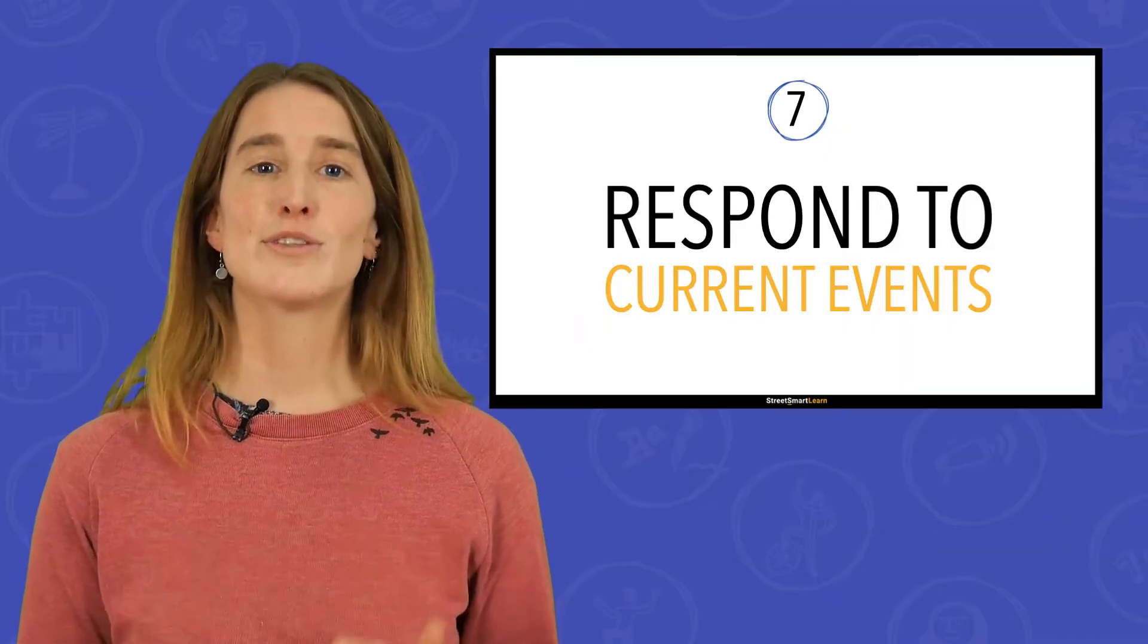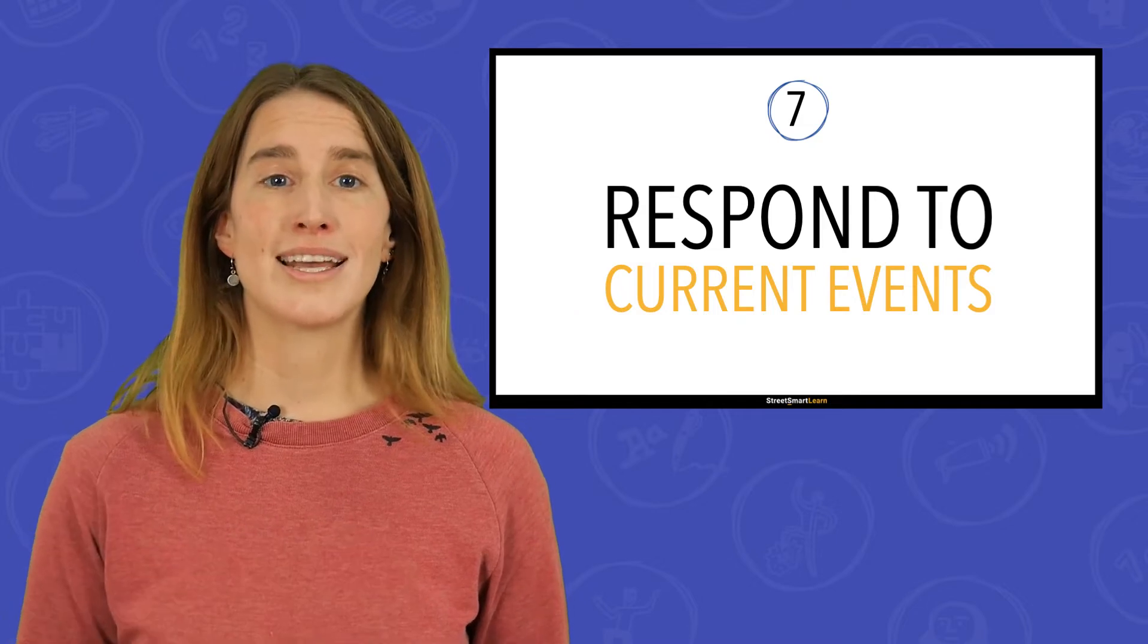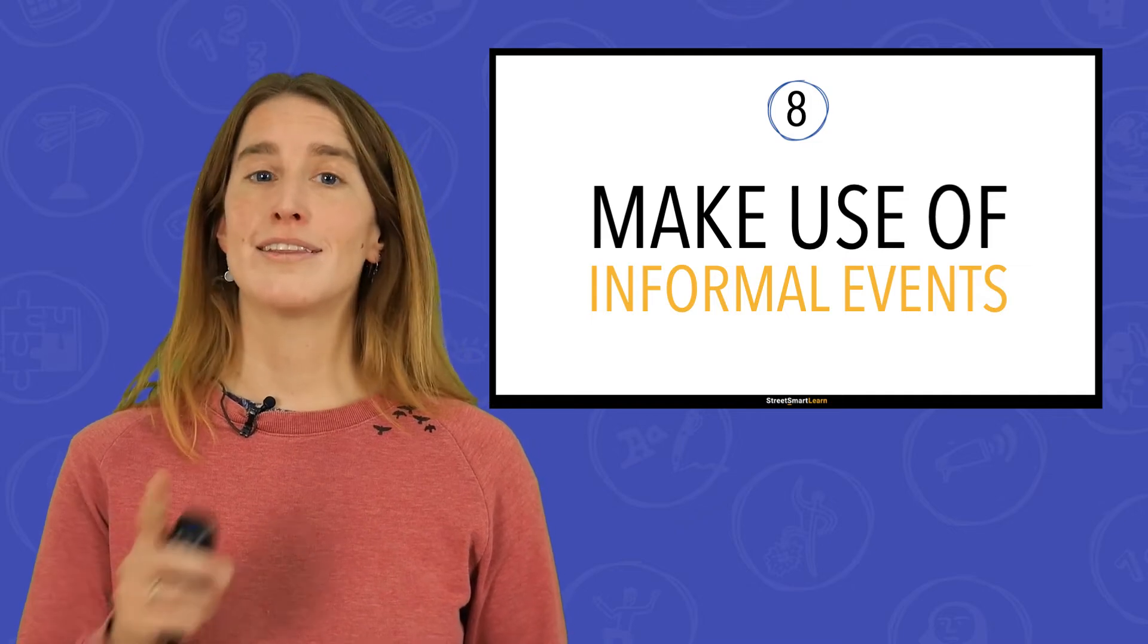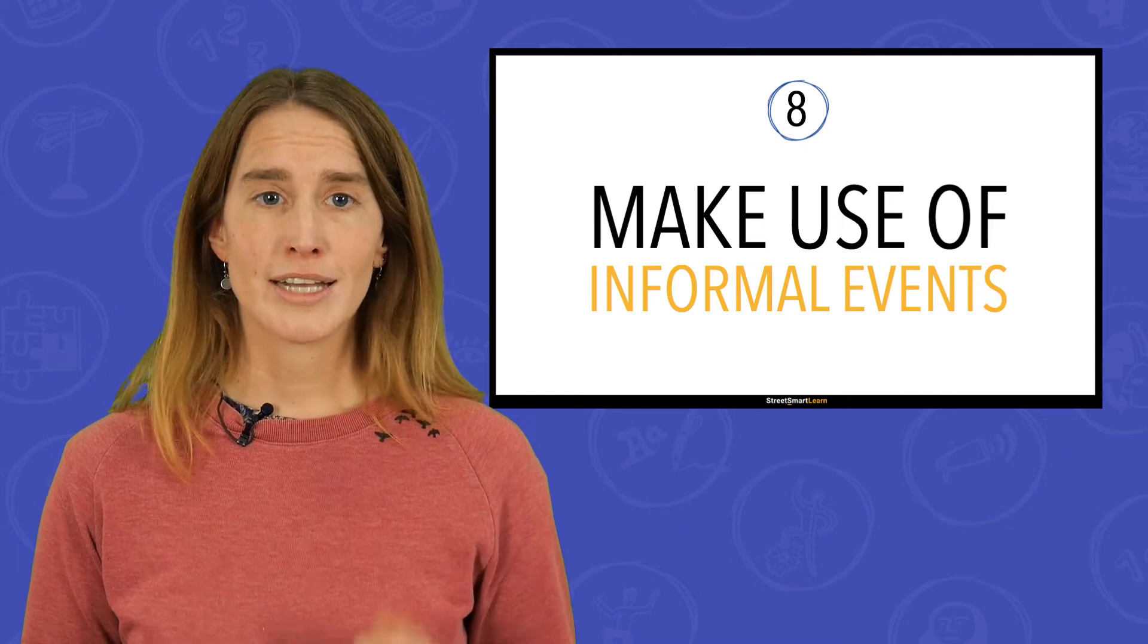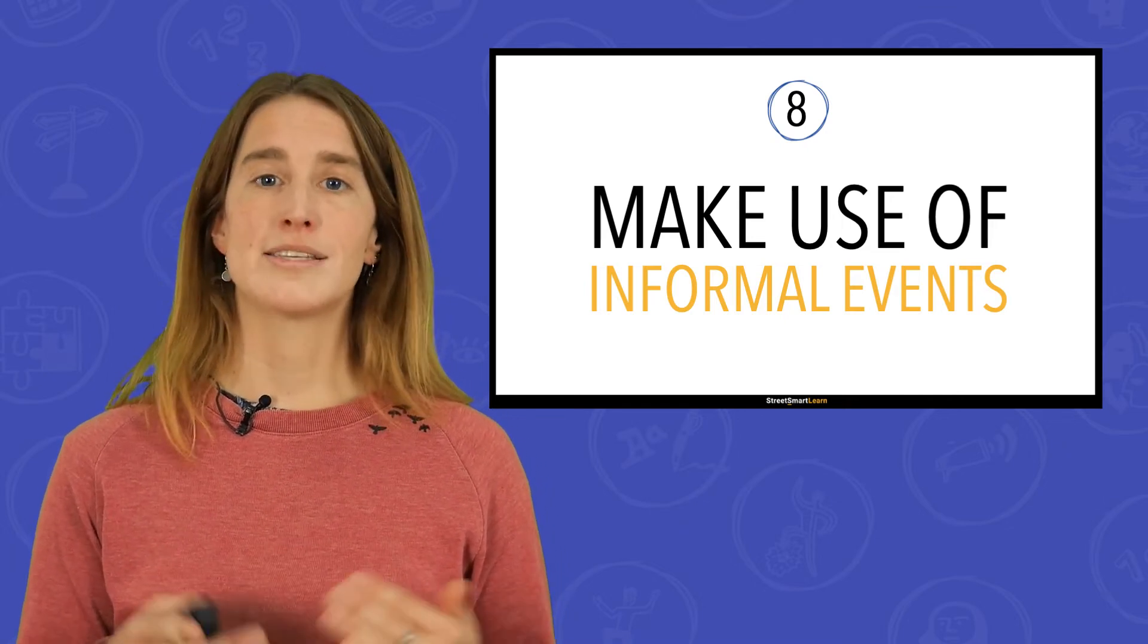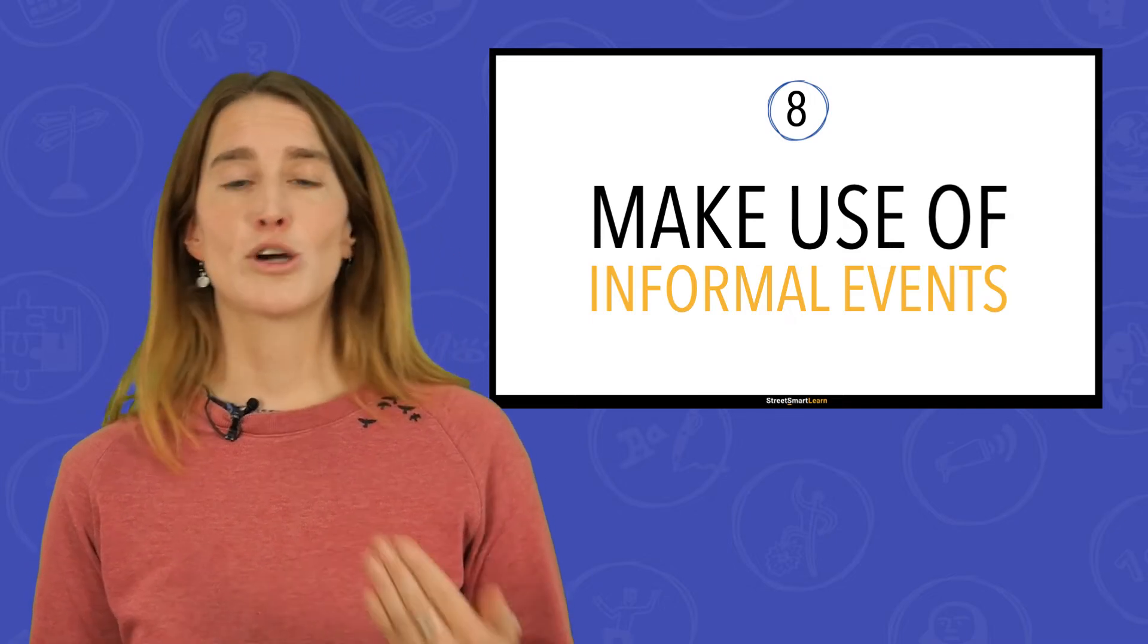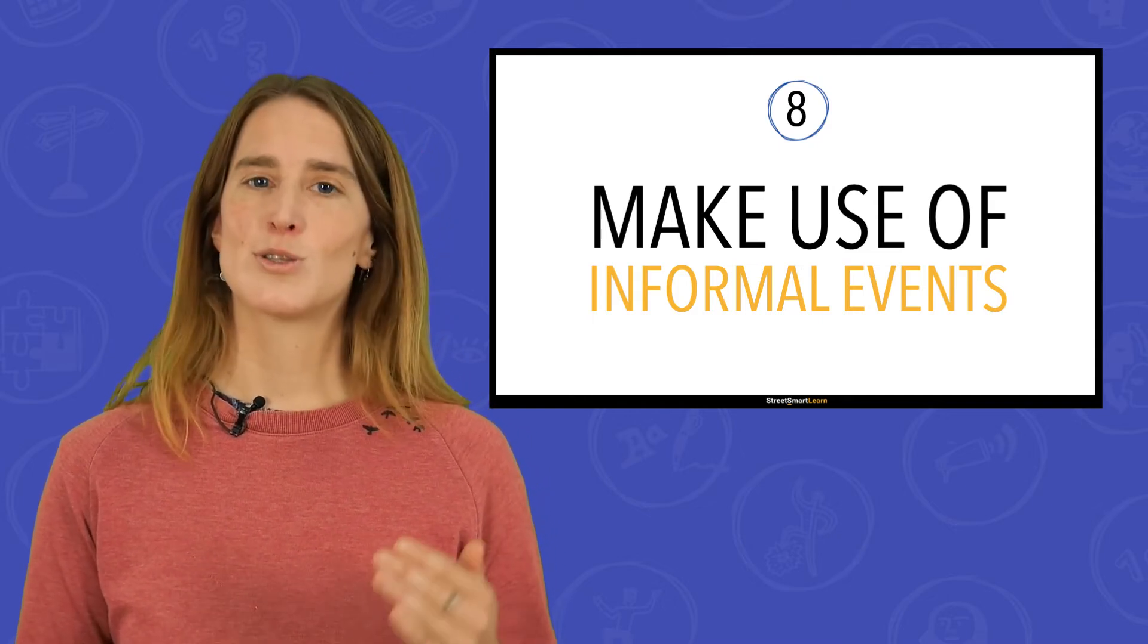Tip 7: Respond to current events. Does the news cover an incidence of sexual abuse? Then use that as a conversation starter. Another way to discuss boundaries is by making use of informal moments, which is our eighth tip. Children learn a lot from these informal moments. How do you react when you see an incidence of sexual transgressive behavior, for example? How you, as an adult, set your boundaries and communicate about them is important too. Whether or not you stand up for yourself, which comments and feedback you give during informal moments with children and youth all matter. So be aware of that.